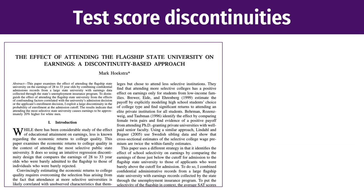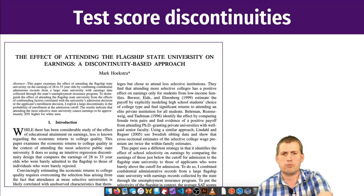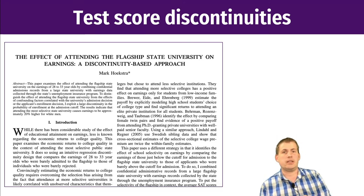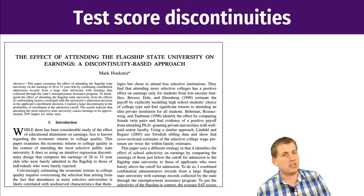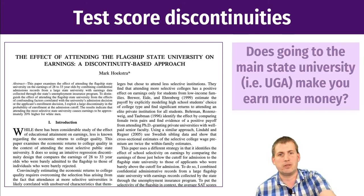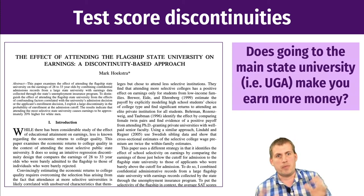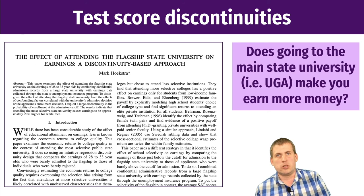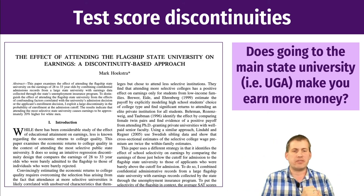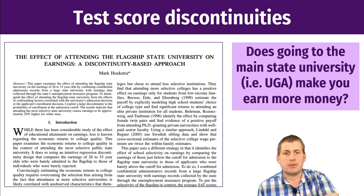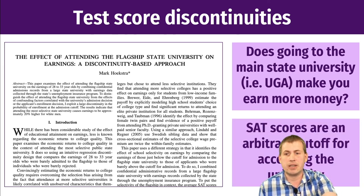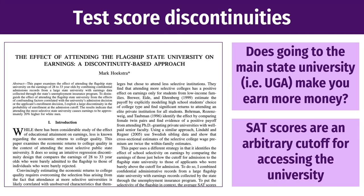The last example relates to what you're doing right now. Researchers were interested in whether attending the main flagship university in your state — like UGA in Georgia, the University of Utah, or the University of Virginia — causes you to make more money later on. Should we encourage people to go to flagship universities? Again, you can't do this with a randomized control trial for ethical reasons, but there are discontinuities: you must meet a certain SAT score to be admitted, and if you don't, you're not accepted.